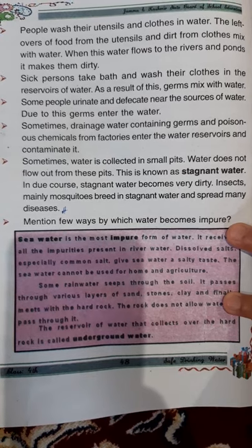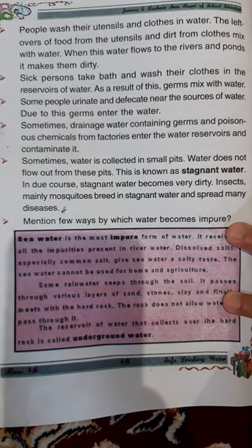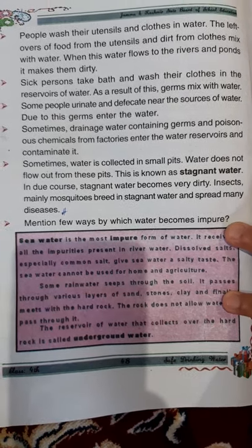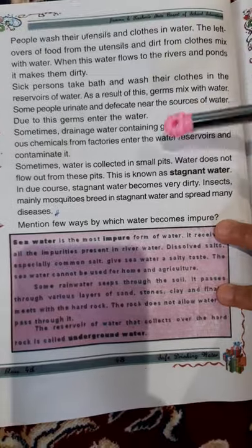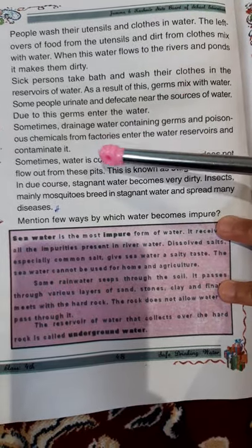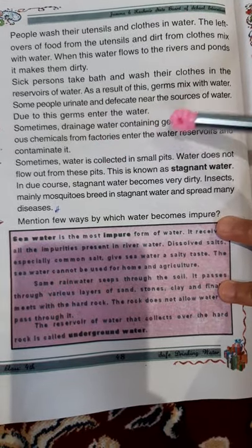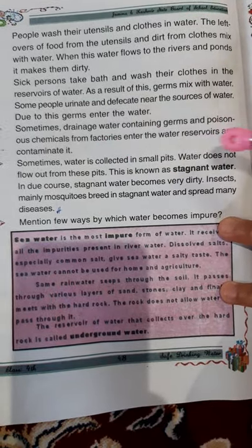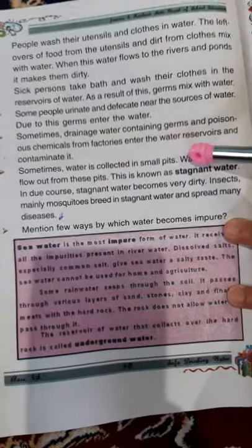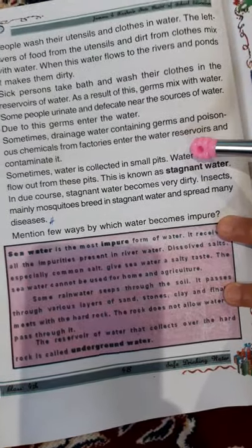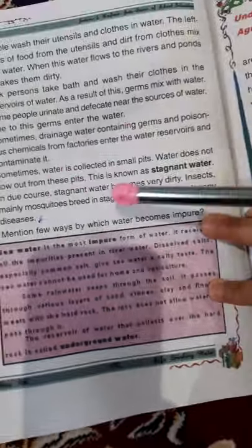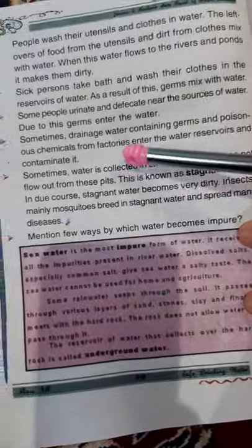Sometimes drainage water containing germs and poisonous chemicals from factories enters the water reservoirs and contaminates it.